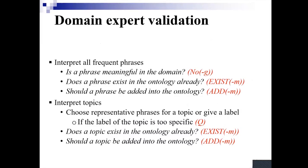In general, the domain expert is involved in validating phrases, topics, and axioms, and needs to decide where the concepts or axioms should be added to the ontology. For our own research purposes, we introduced different validation categories: 'add' — whether knowledge should be added to the ontology; 'add with modification' (add-m) — add with a small modification; 'exist' — the knowledge already existed in the ontology; 'no' — not relevant at all; 'no-g' — a concept which is too general for this ontology; or 'q' — if it's too specific.